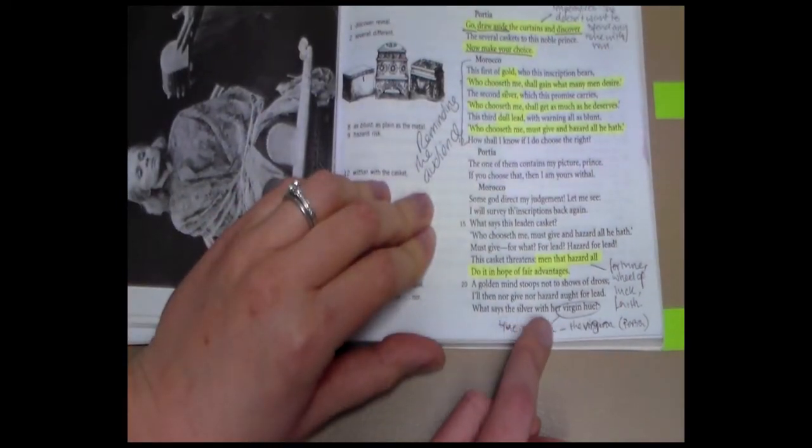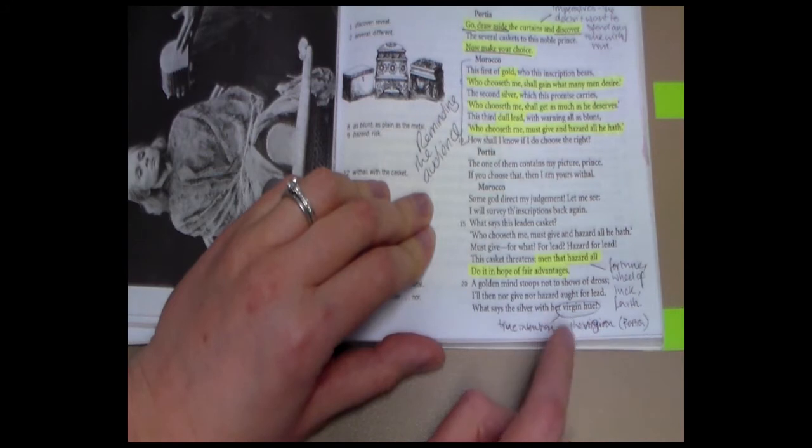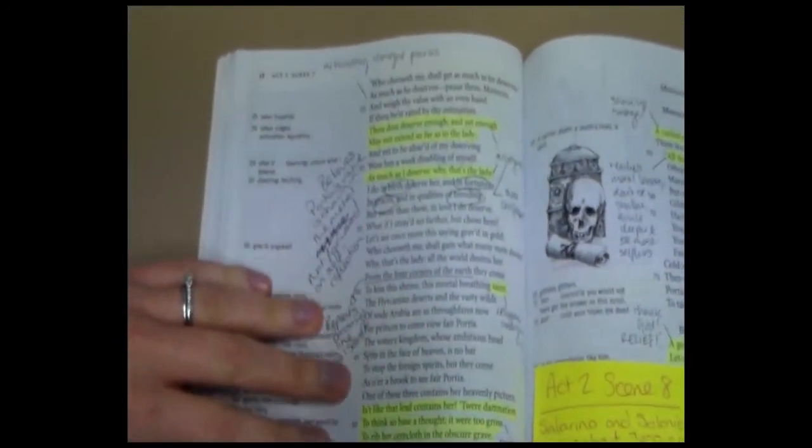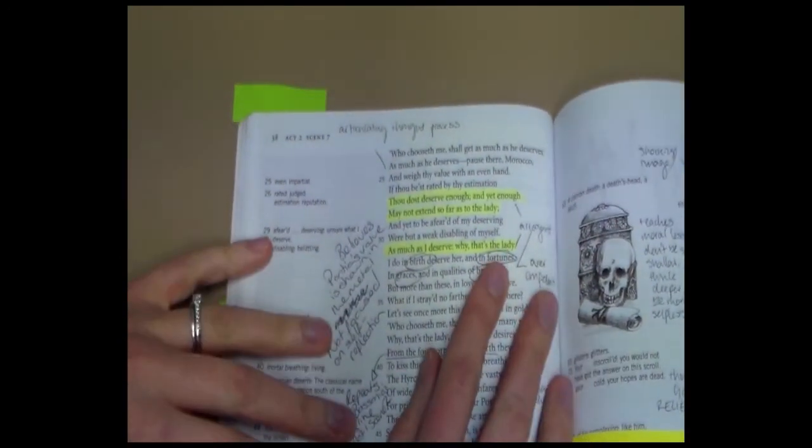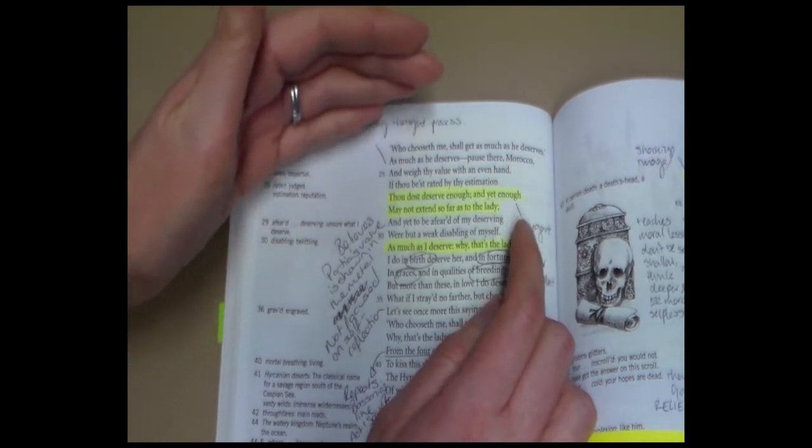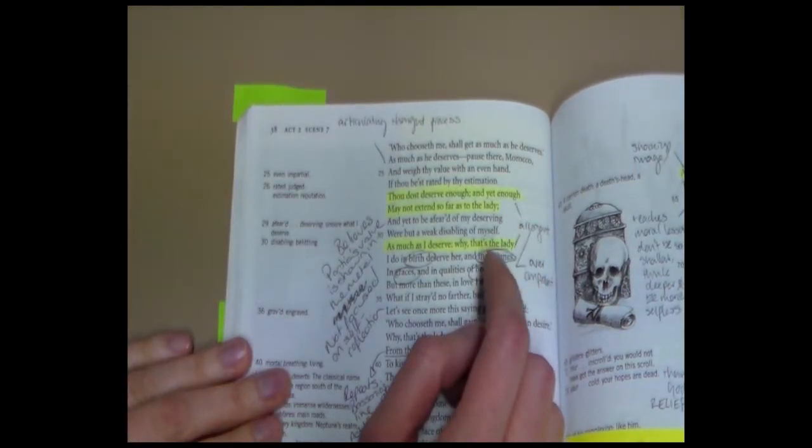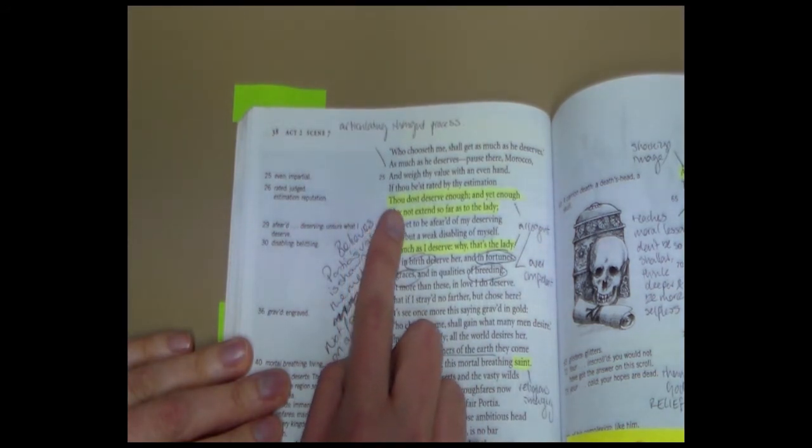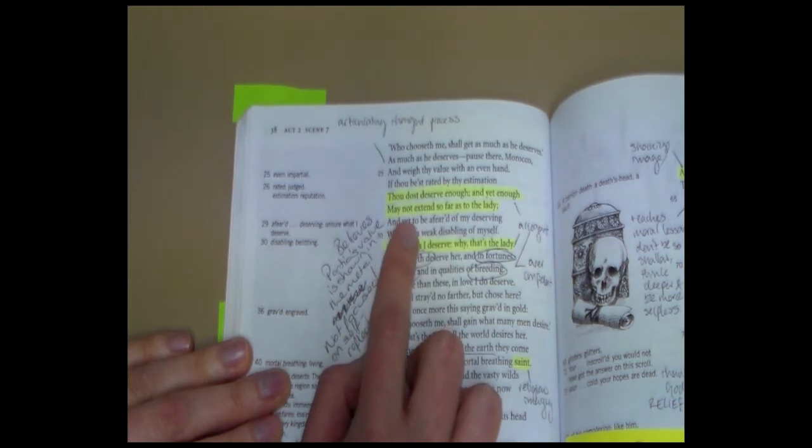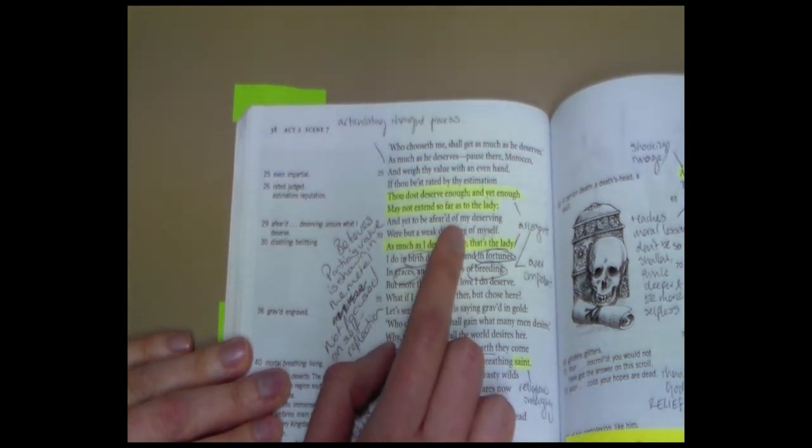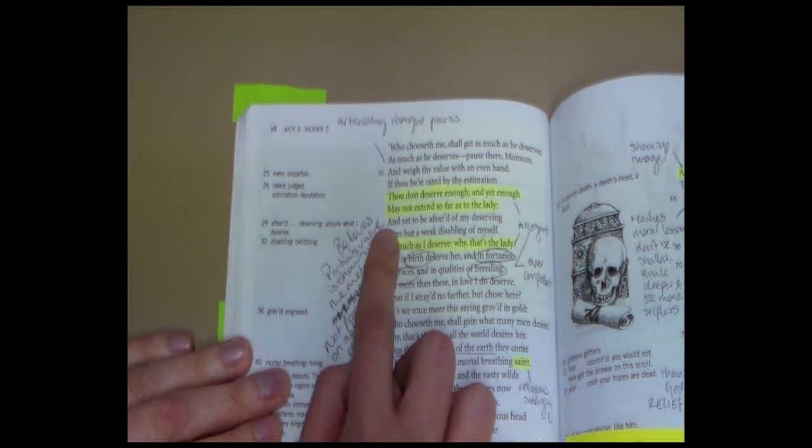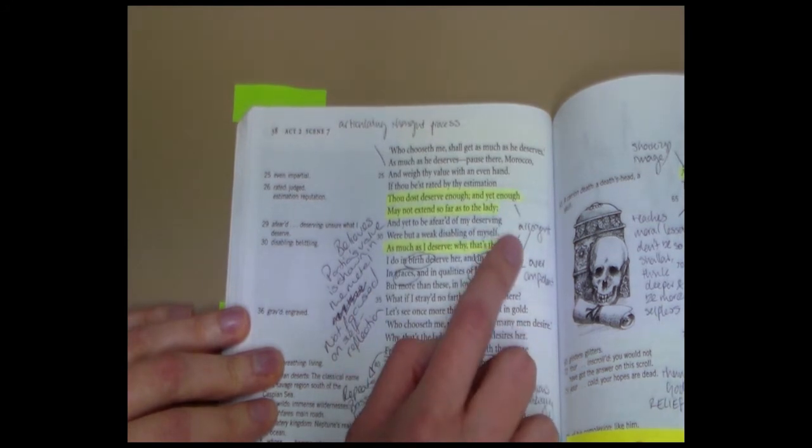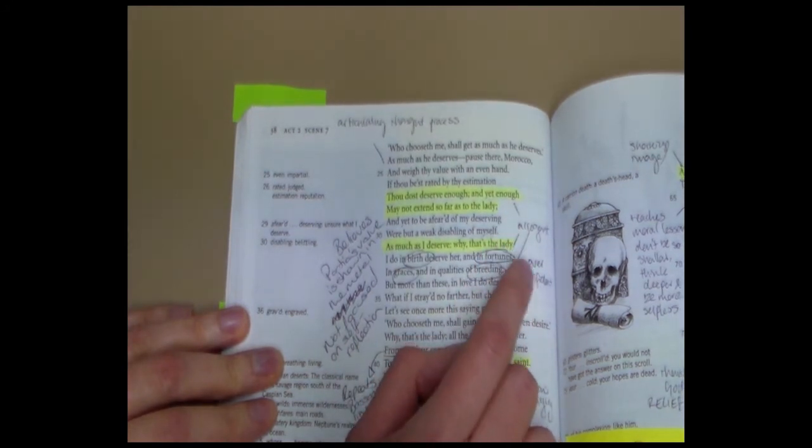Then he moves on to the silver and he talks about the virgin hue of the silver and we're reminded of Portia in that description. He articulates his thought process as he goes through looking at each one of these caskets. He talks about the fact that thou dost deserve enough and yet enough may not extend so far as to the lady. He doesn't want to just get enough. He wants everything. He wants to win Portia. And we see a level of arrogance and overconfidence in this description.